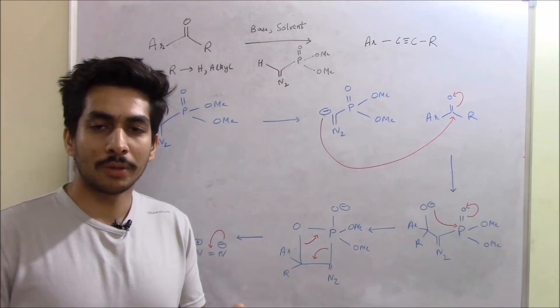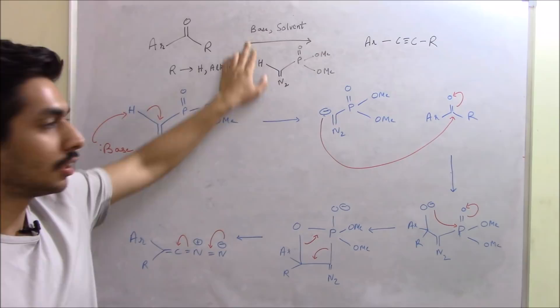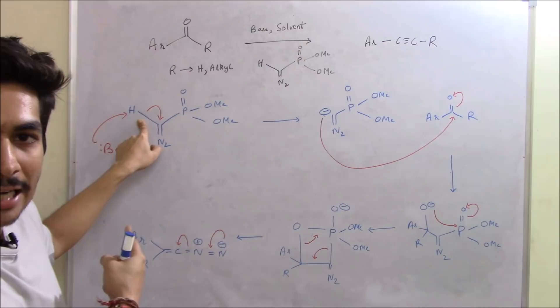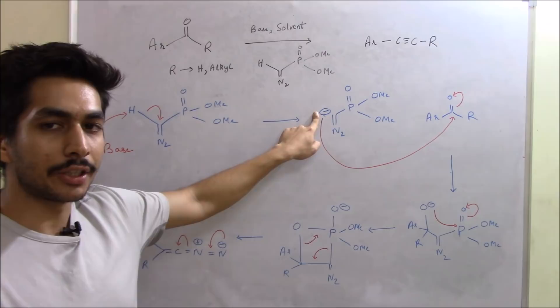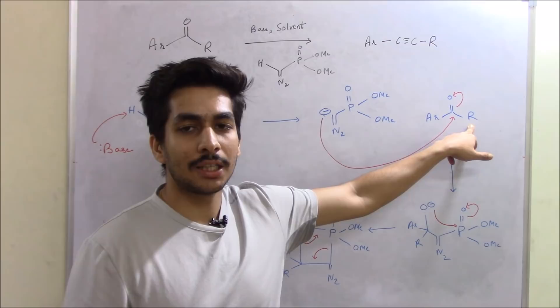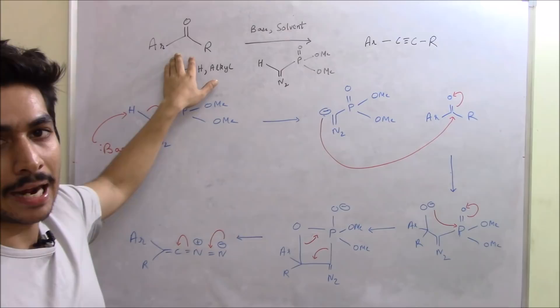The first step is that the base abstracts the only hydrogen present in the dimethyl diazo phosphonate reagent, and a negative charge is generated. We then take the aldehyde or ketone — the R group can be hydrogen or an alkyl group, depending on whether it's an aldehyde or ketone. This reaction is only applicable to aryl ketones and aryl aldehydes.